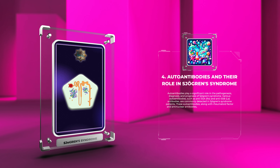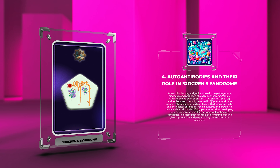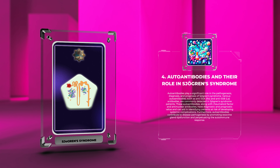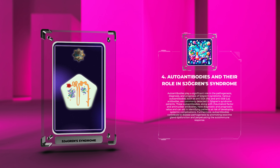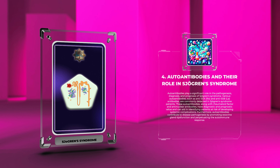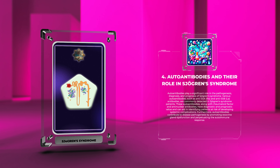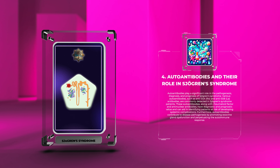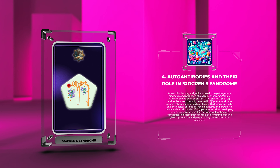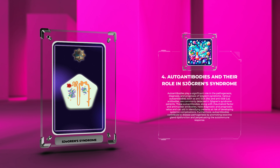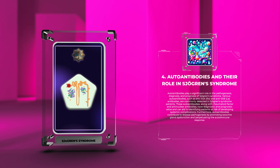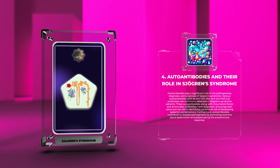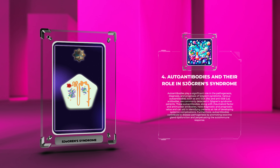Autoantibodies play a significant role in the pathogenesis, diagnosis, and prognosis of Sjogren's Syndrome. Various autoantibodies, such as anti-SSA (Ro) and anti-SSB (La) antibodies, are commonly detected in Sjogren's Syndrome patients. These autoantibodies, along with rheumatoid factor and antinuclear antibodies, have diagnostic and prognostic value and can aid in identifying patients at risk of systemic complications. Autoantibodies also contribute to disease pathogenesis by promoting exocrine gland dysfunction and perpetuating the autoimmune response.